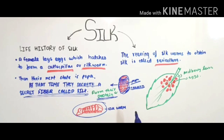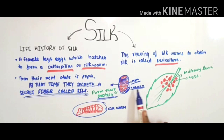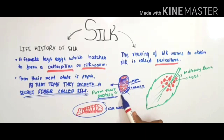To obtain silk, the cocoon — formed during the pupa stage — is placed in boiling water. Boiling kills the pupa inside. The cocoon then starts to unravel into threads. These threads are the silk fiber, and from many cocoons, a lot of silk thread is obtained.